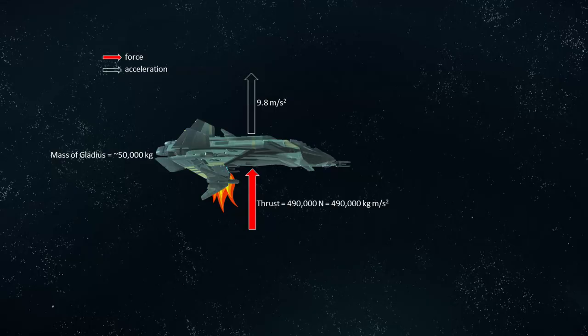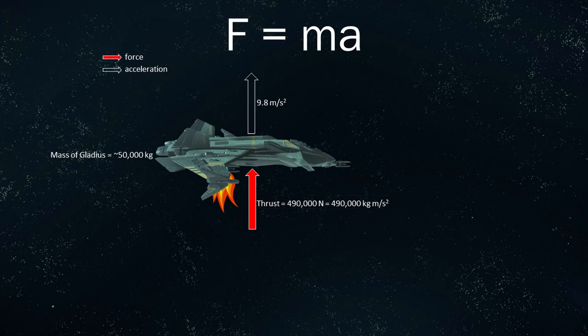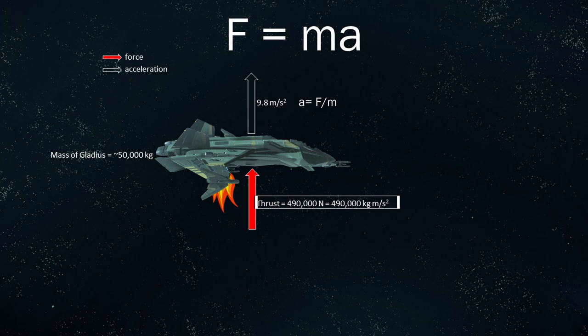Force is what causes objects to accelerate. In a ship, thrusters produce thrust — a force which causes ships to accelerate. Force is equal to mass times acceleration, so acceleration is equal to force over mass. The acceleration of a ship is directly proportional to its thrust and inversely proportional to its mass. This is intuitively obvious: smaller ships tend to accelerate more quickly, and larger ships need more powerful thrusters to achieve decent maneuverability. Maneuverability is the degree to which a ship can accelerate and alter its existing velocity.